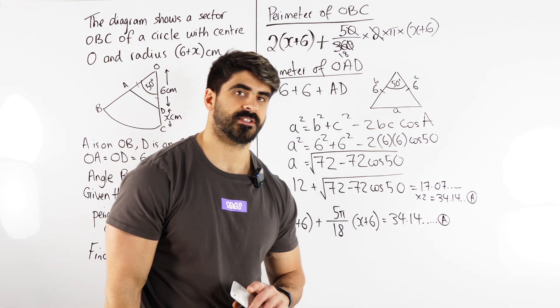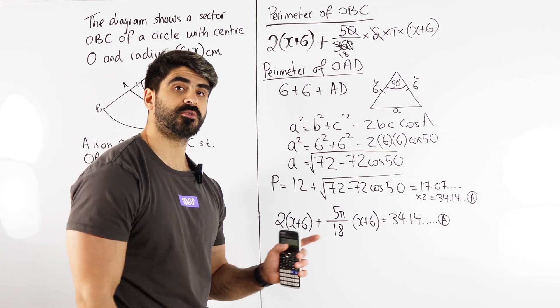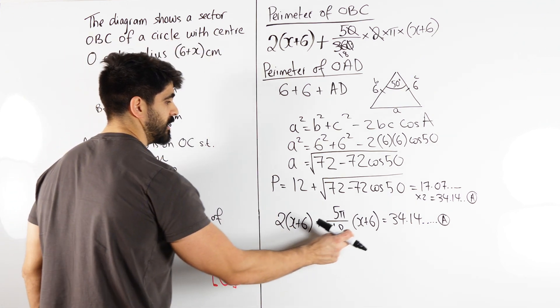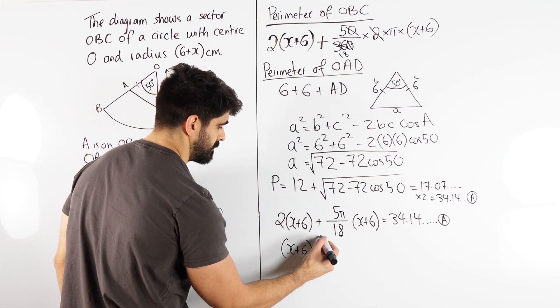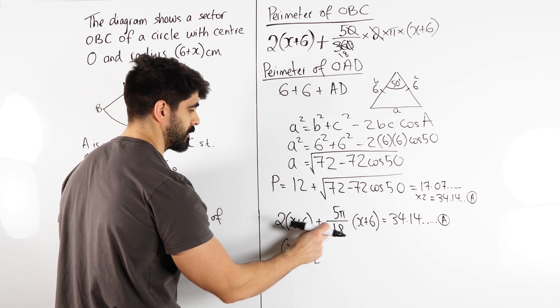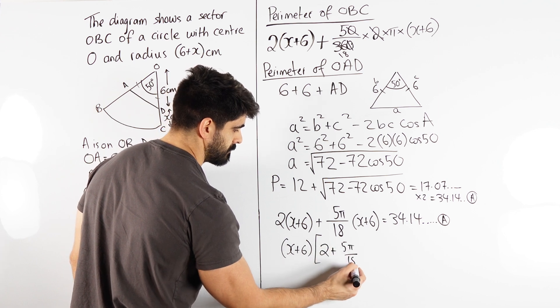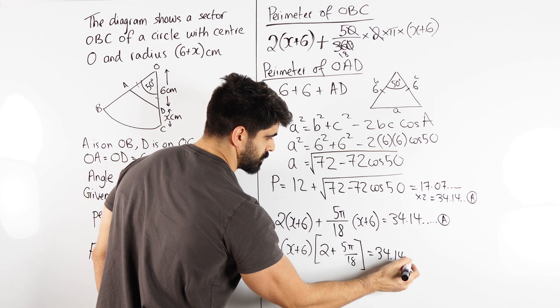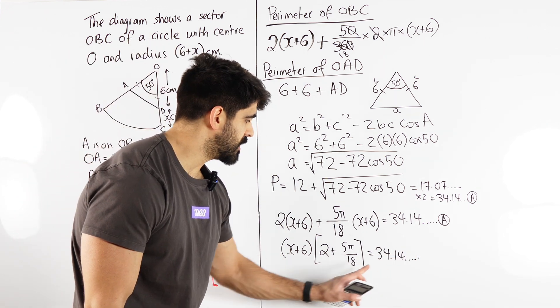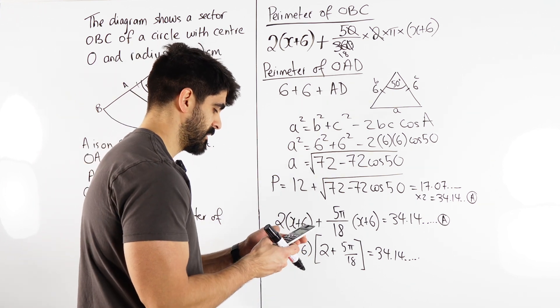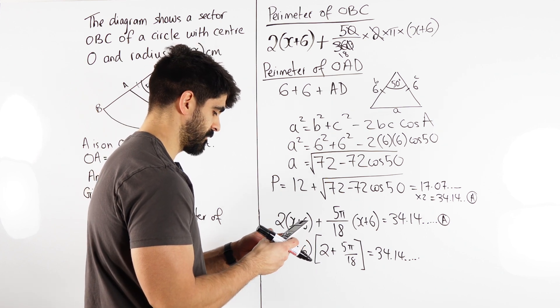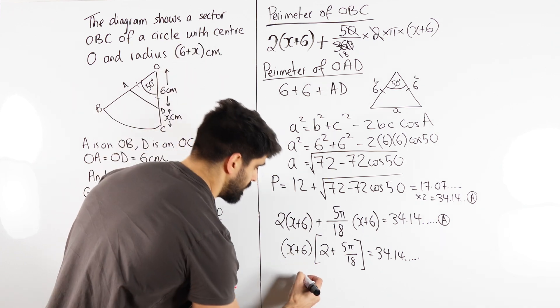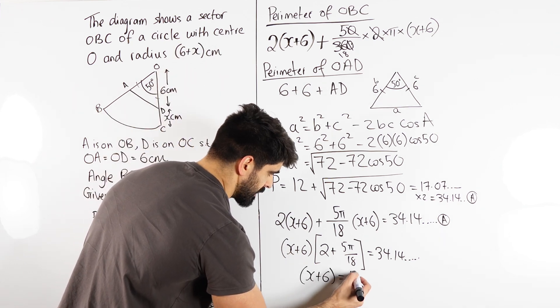Now what's the cheekiest way to rearrange for x here? It is not to expand all the brackets. If you're a top student, you should know that these two being common means we can factorise it out. The quickest way to rearrange for this x is to realise that it is a common factor and factorise it out. We'll be left with 2 plus 5 over 18. Or 5 pi over 18. Is that 34.14. So to solve this, I'm going to do this divided by this bracket. So I'm going to do fraction A over 2 plus fraction. And I'm using a bracket here. 5 pi over 18. I get 11.88.